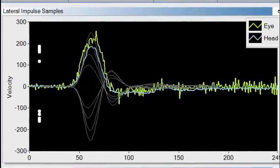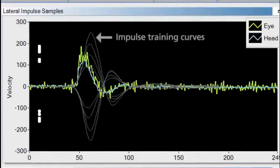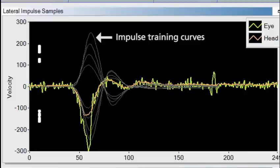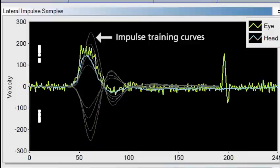The lateral impulse window helps you perform good head impulses. The gray training lines represent the shape of good head impulses at a variety of velocities: 50, 100, 150, and 200.